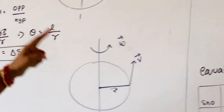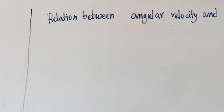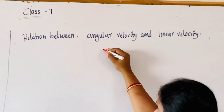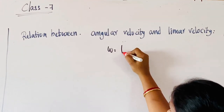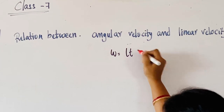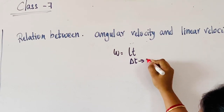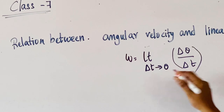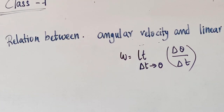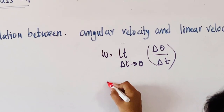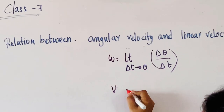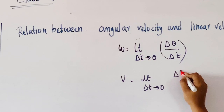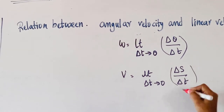Now we are moving to see the relation between angular velocity and linear velocity. We have the formula for angular velocity: omega equals the limit as delta-t tends to 0 of delta-theta by delta-t. The formula for linear velocity is: v equals the limit as delta-t tends to 0 of delta-s by delta-t. These are the two formulas we have.